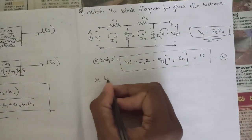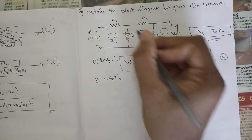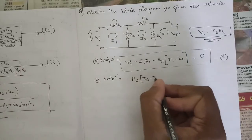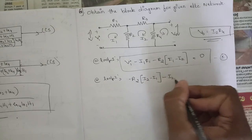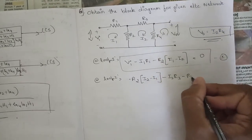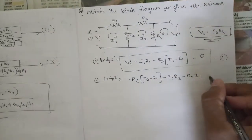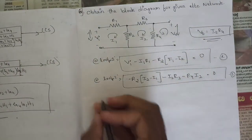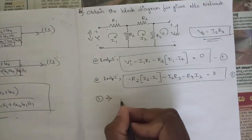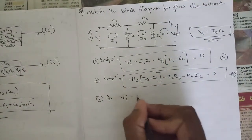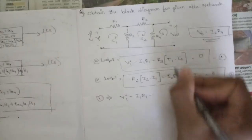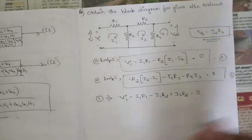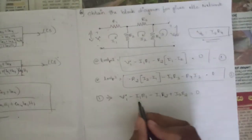Similarly for loop 2: starting from R2, minus R2·(I2 minus I1) minus I2·R3 minus I2·R4 = 0. This is the second equation. Now from equation 1, solve to find I1.